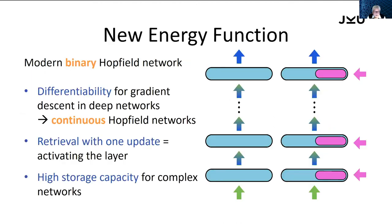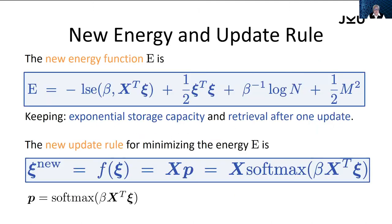The problem is these Hopfield networks are binary, and we introduce continuous modern Hopfield networks because we want to have something differentiable, because we want to integrate them into layers of deep neural networks. The retrieval should be in one update, so we can handle them like activating one layer, and they should have high storage capacity for solving complex tasks.